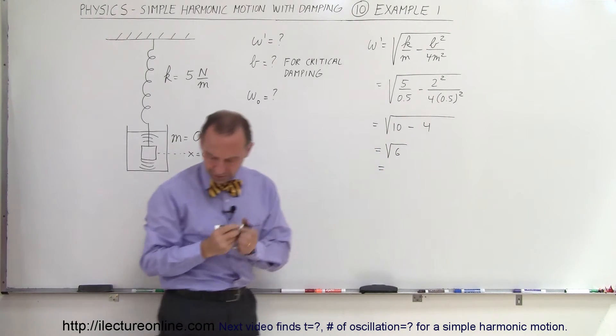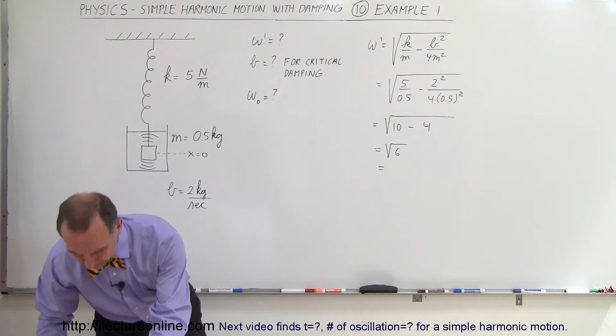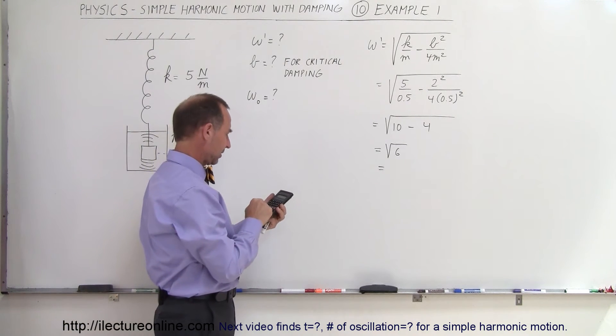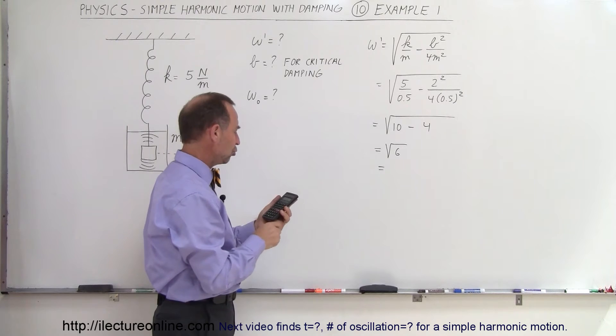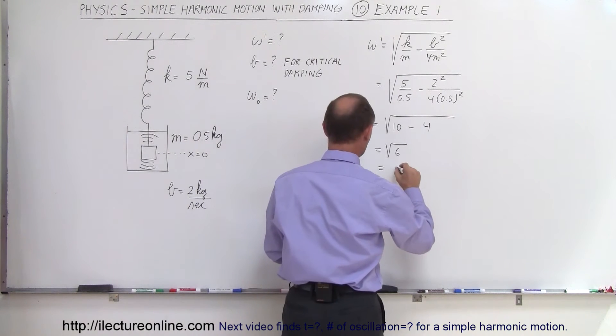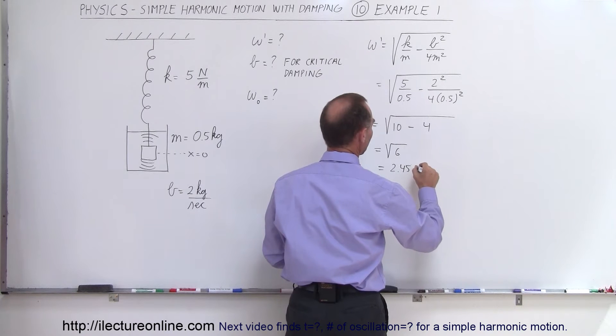Which is equal to, and let's see here with a calculator, take 6, take the square root of that and that would be 2.45.